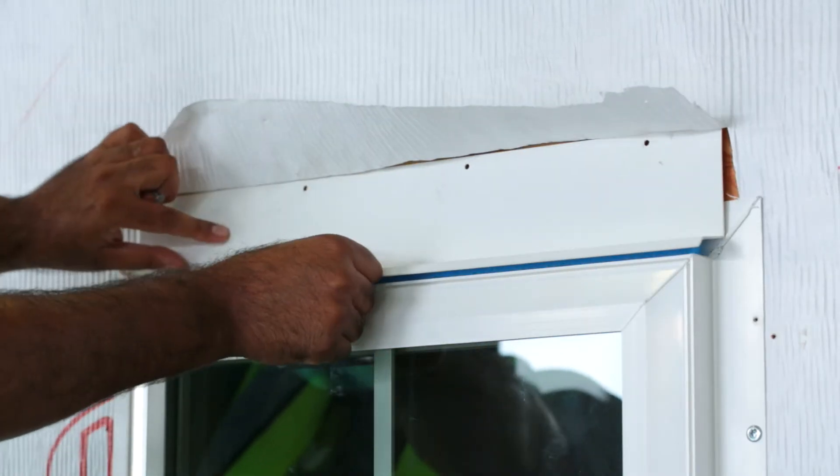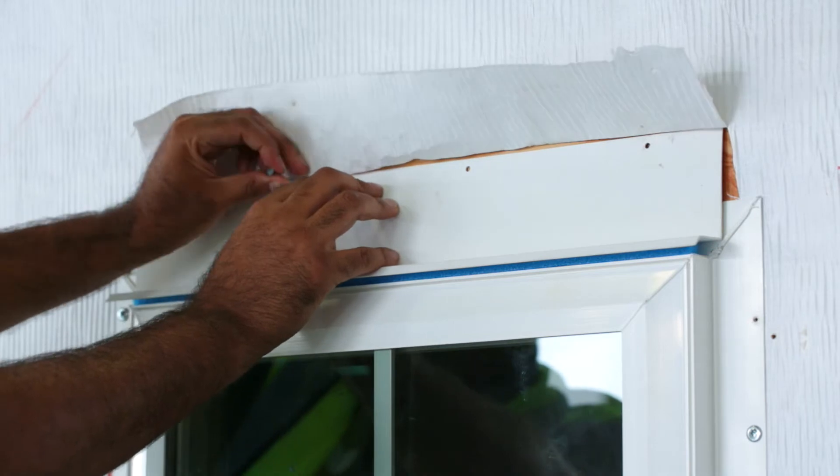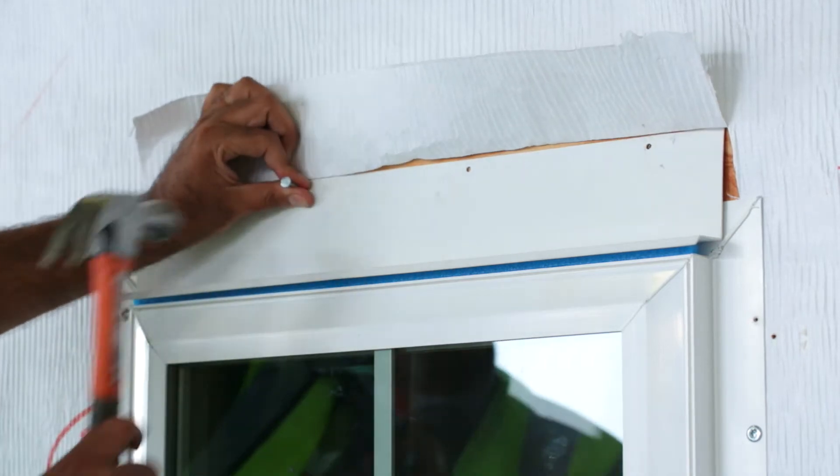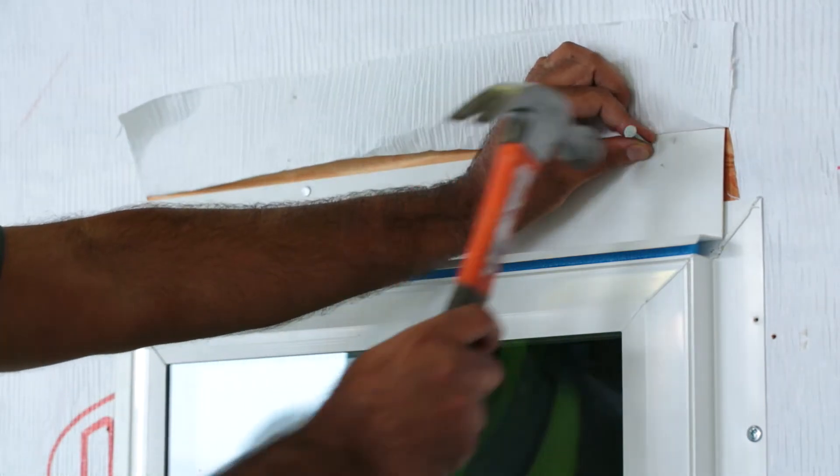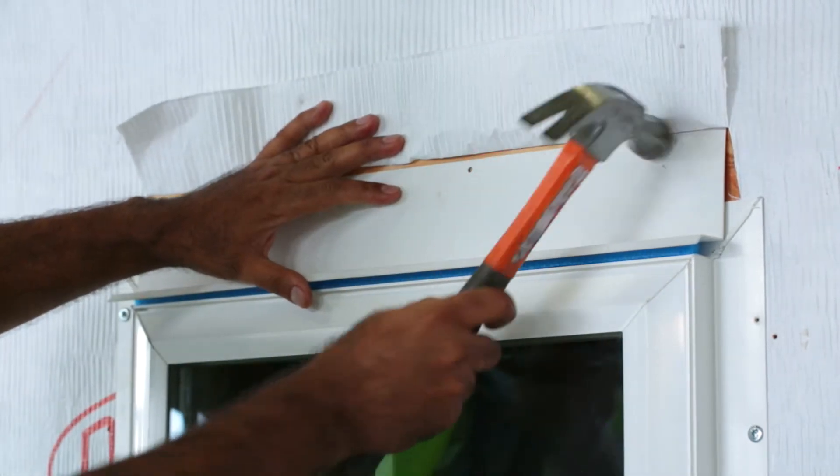Drip flashing must be installed under both weather-resistive barriers to provide positive water drainage. Using the nail hole, the drip flashing is attached. Compression is not required, contact is.